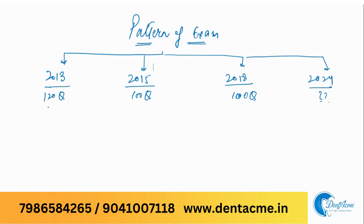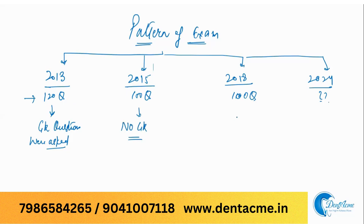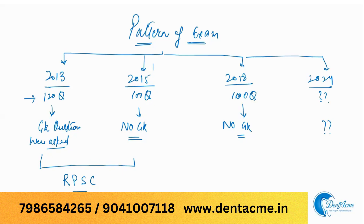Out of the 120 questions in the 2013 exam, there were questions on GK. In 2015, there were no GK questions. In 2018, there were no GK questions either. Then, who was the conducting body? The 2013 and 2015 exams were conducted by Rajasthan Public Service Commission. From 2018 onwards, it is conducted by Rajasthan University of Health Sciences, RUHS. This time again, the conducting body is Rajasthan University of Health Sciences.